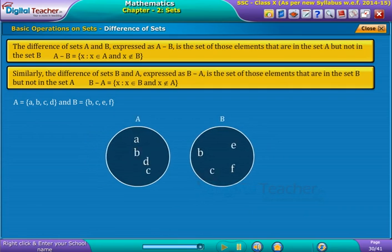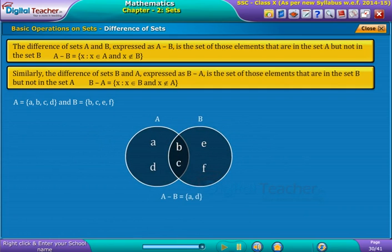For example, if A equals {a, b, c, d} and B equals {b, c, e, f}, then A minus B equals {a, d} and B minus A equals {e, f}.